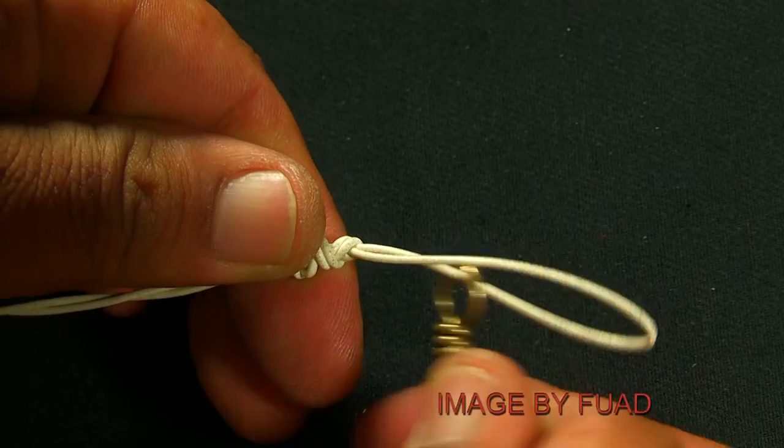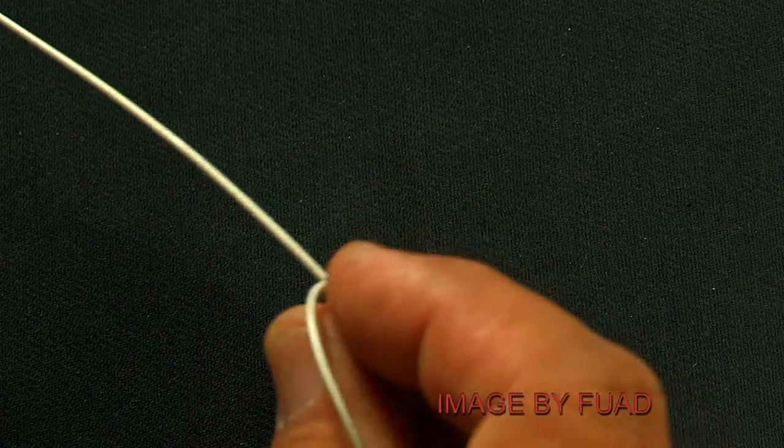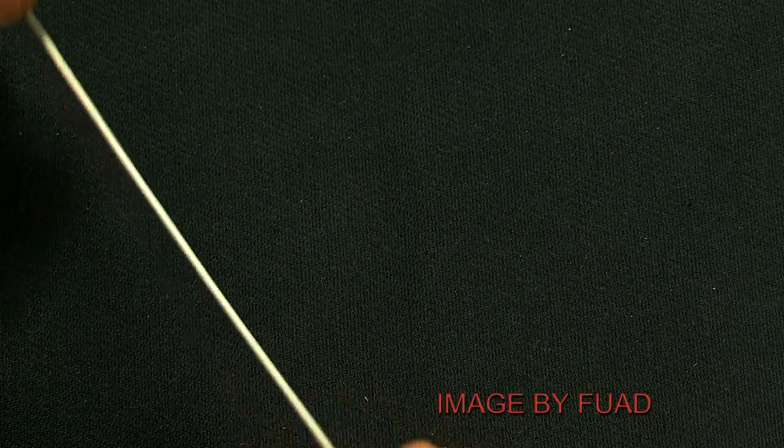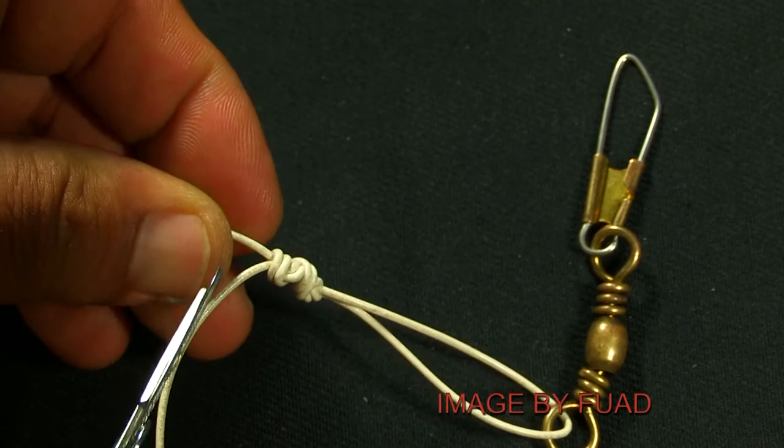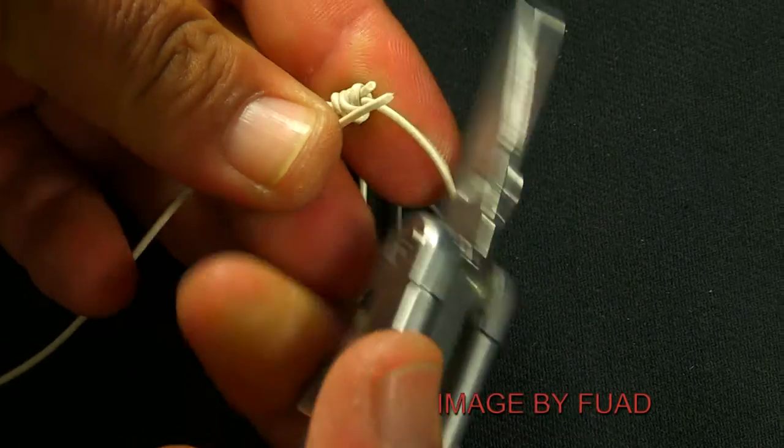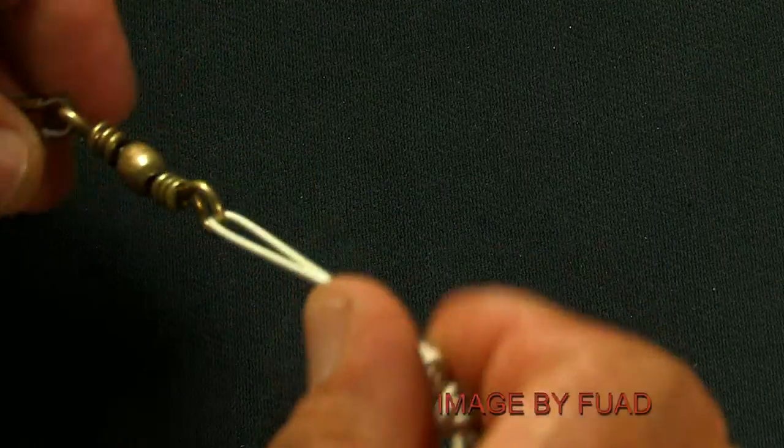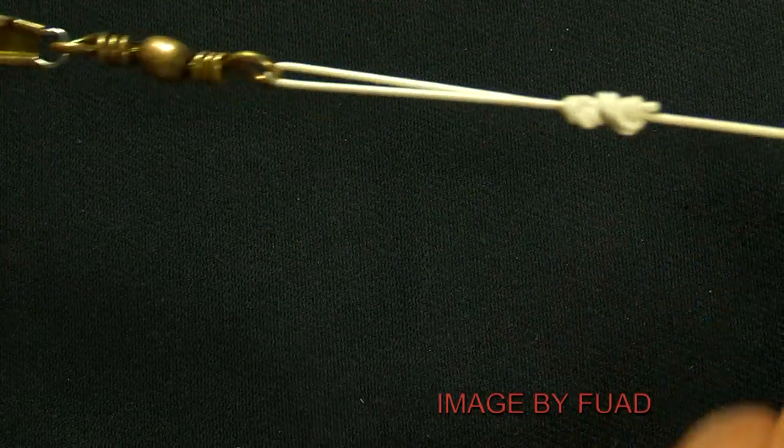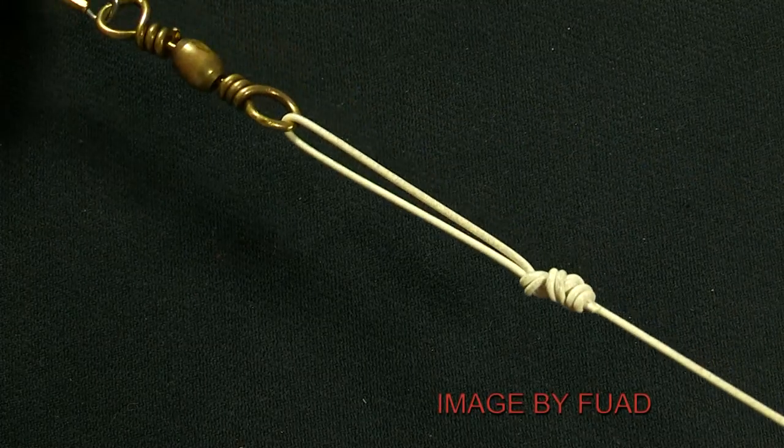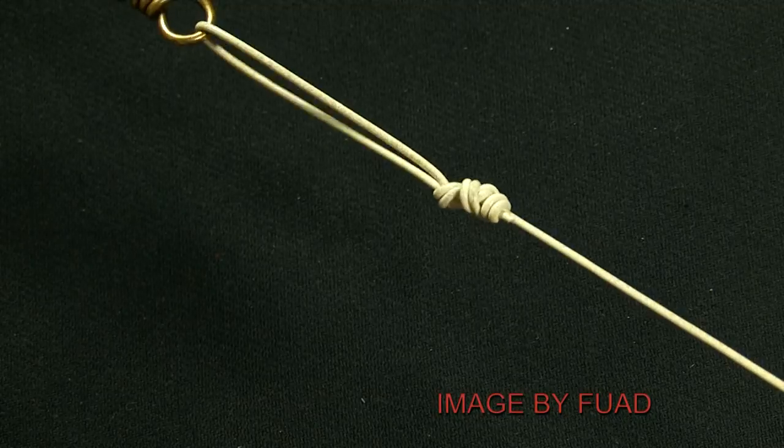You can cut this off right here. And this is your King Sling Knot right there.